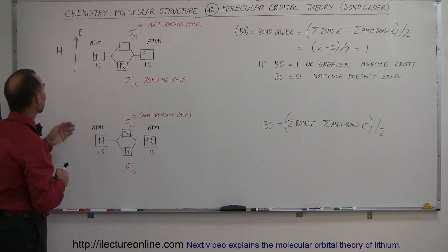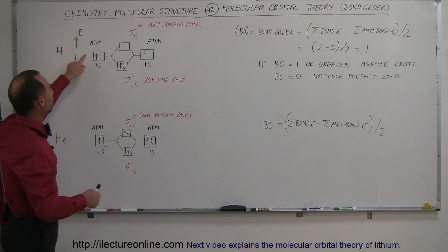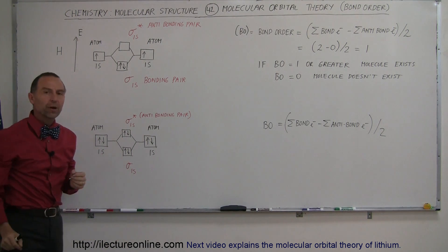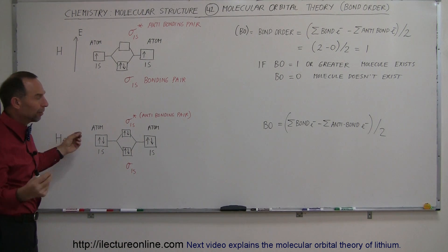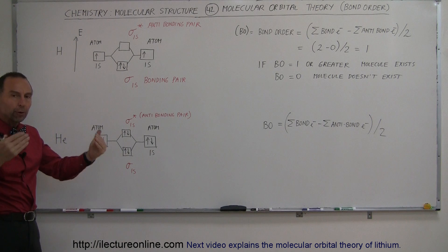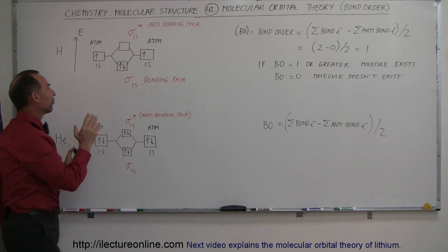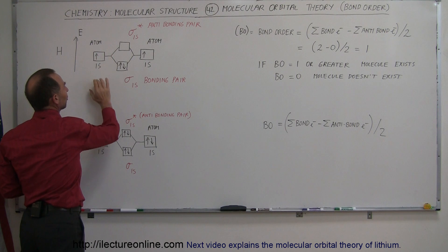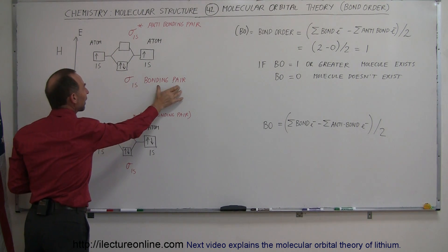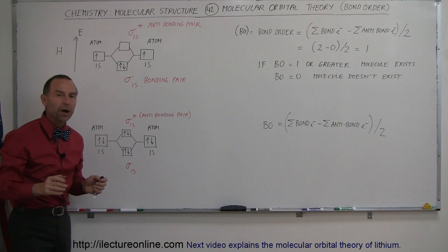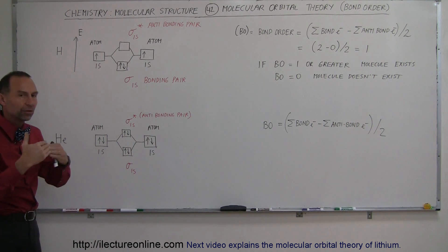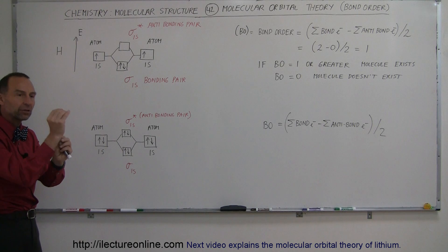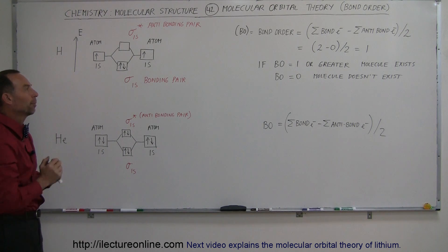For example, if we take two hydrogen atoms, each with one electron in the 1s orbital, when they come together they form a bond. The first way a bond can form is by creating a bonding pair in a sigma bond, a 1s orbital sigma bond. The two s orbitals overlap, form a region where the two electrons can exist, and they form a bonding pair.